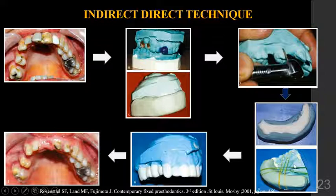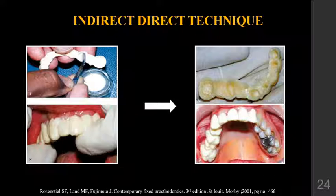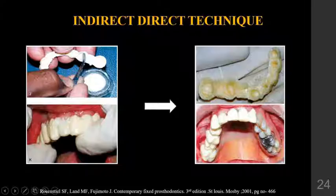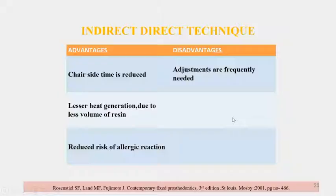In the clinical appointment, tooth preparation is done. The interim restoration is tried in to evaluate proximal contact, contour, surface defects, marginal fit, and occlusion. Relining of the interim restoration can be done in the patient, followed by finishing, polishing, and final cementation with temporary cement. The advantage of this technique is reduced chair-side time, less heat generation due to less volume of resin, and reduced risk of allergic reaction. The disadvantage is that adjustments are frequently needed.